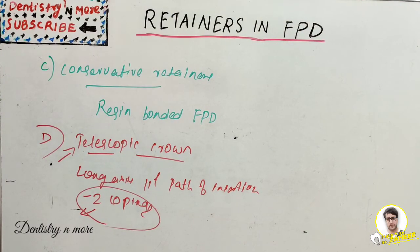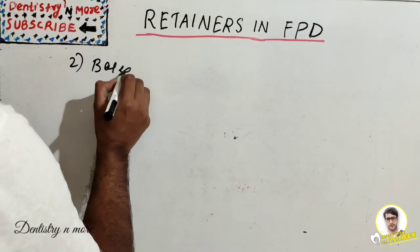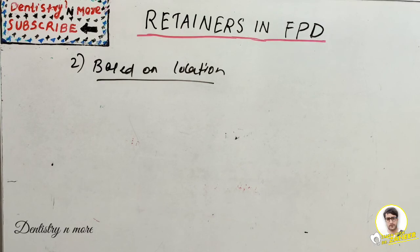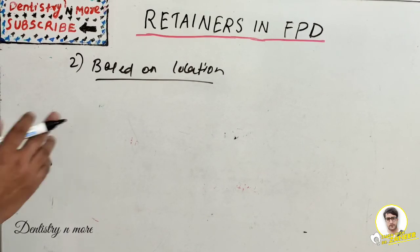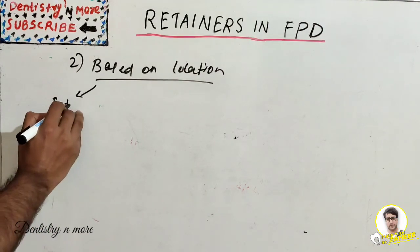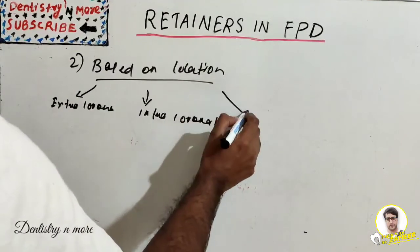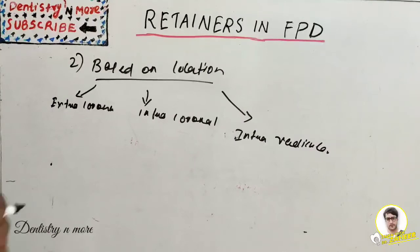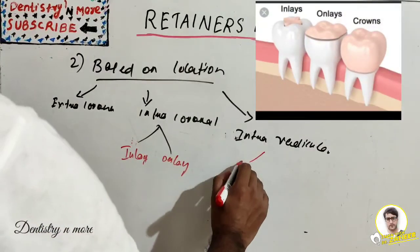The second classification is based on location: extra coronal (complete coverage or partial coverage), intra coronal (inlays and onlays), and intra radicular (post and core).